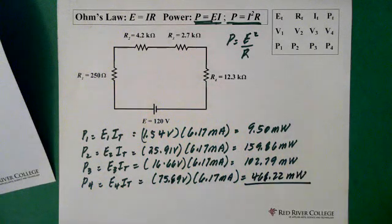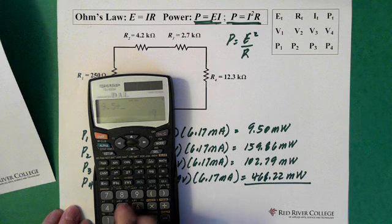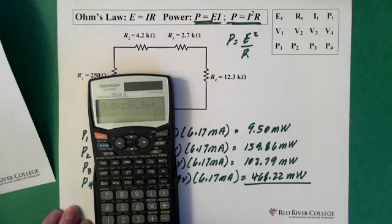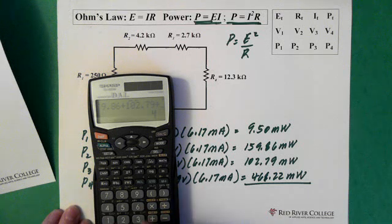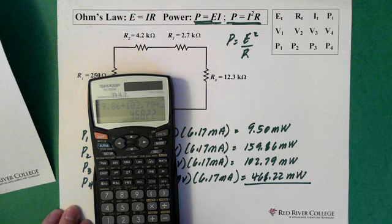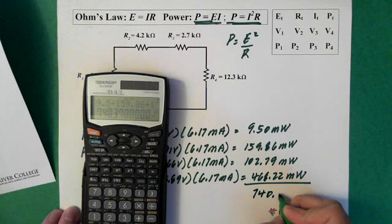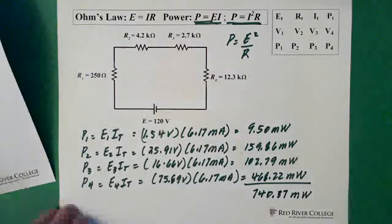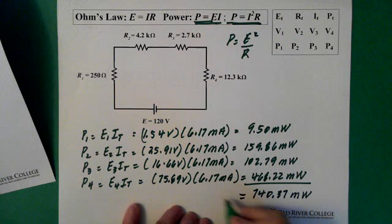Now, it's a good idea to do a check. So, you add them up. And of course, all we're doing is adding up the numbers because they're all in milliwatts. 9.5 plus 159.86 plus 102.79 plus 468.22 equals 740.37 milliwatts. At this point, it's a good idea to do a check. And the check for total power, and that's what this is, is total power.